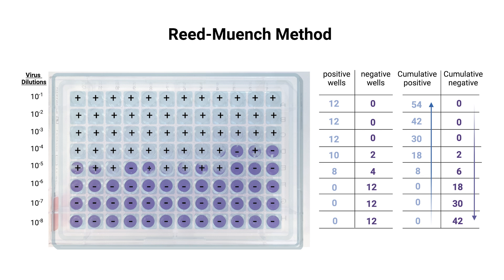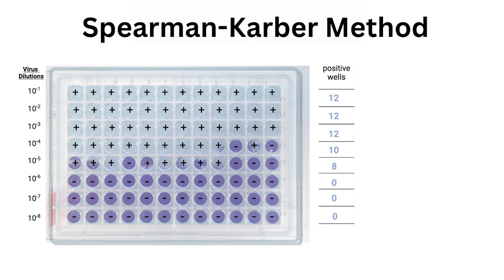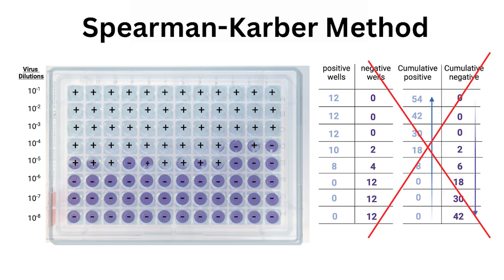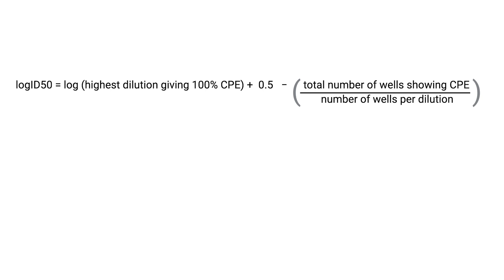Unlike the Reed-Muench method, which calculates cumulative percentages of infected wells at each dilution to determine where the infection crosses the 50% threshold, the Spearman-Kärber method takes a different approach. It directly evaluates the infection rates at each individual dilution without relying on cumulative percentages. This method does not require adding up the infected wells from the lowest dilution to the highest to see how they cumulatively affect a proportion of the total population.